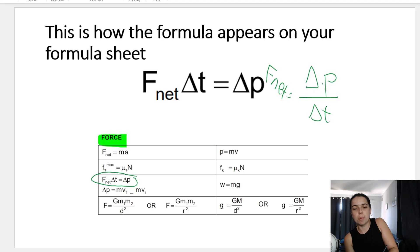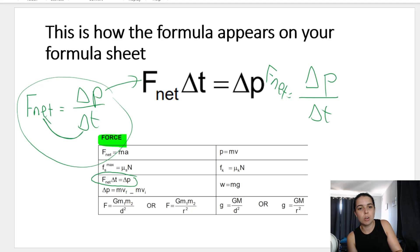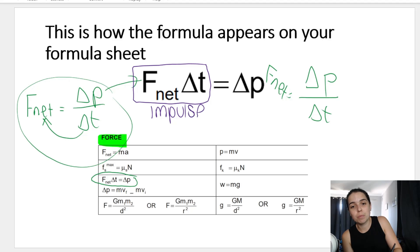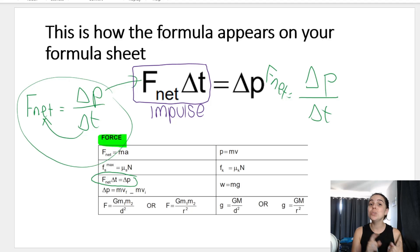F_net equals change in momentum divided by change in time. All they did to rearrange it is take time over to the other side, giving F_net multiplied by delta t equals delta p. What we're going to learn in the next few videos is that F_net multiplied by delta t is actually called impulse. So impulse is also equal to the change in momentum — that's where the impulse-momentum theorem comes from. We'll do impulse in the next lesson.